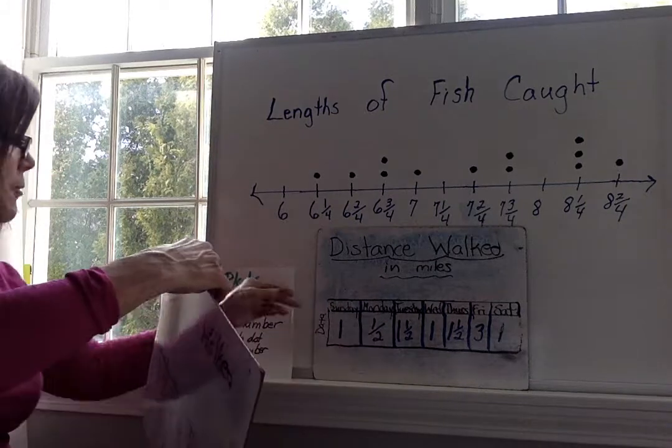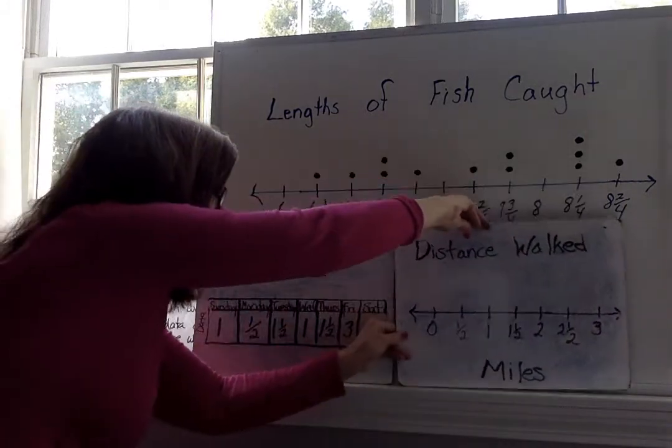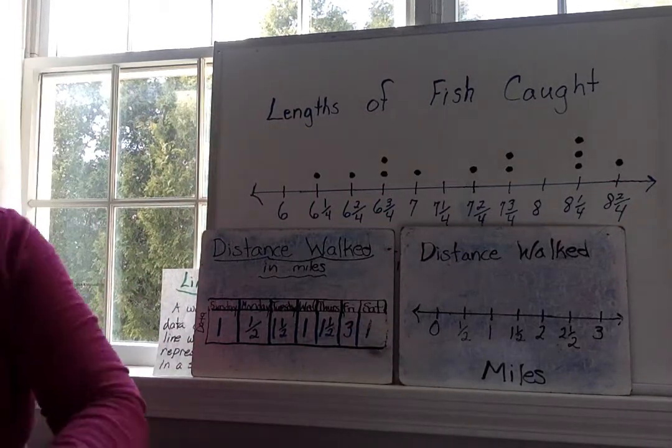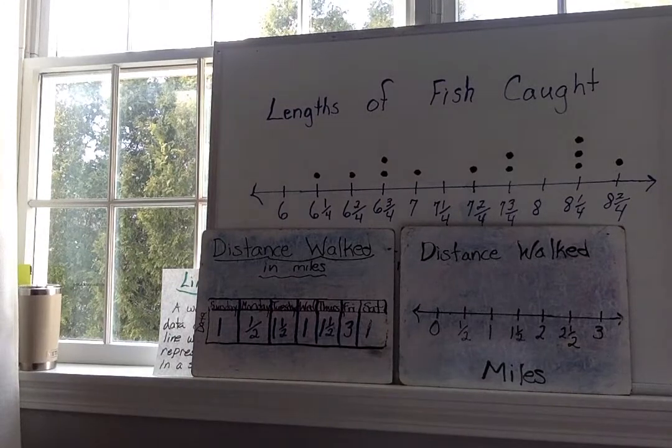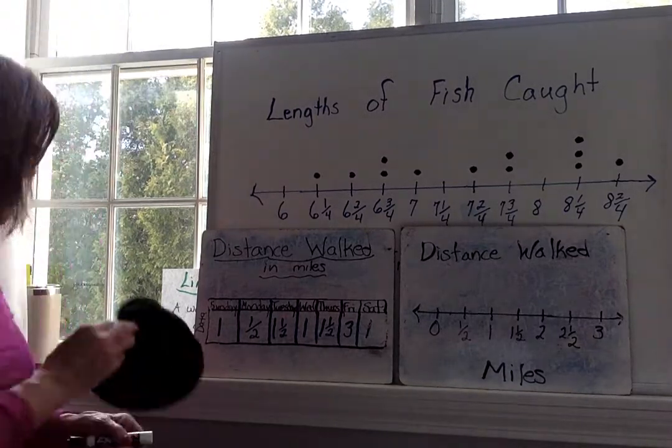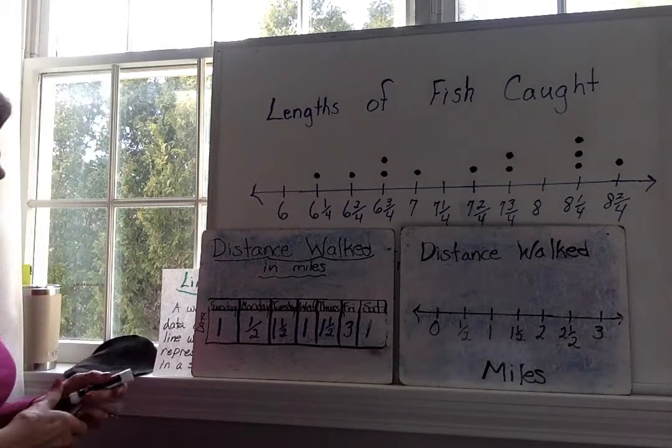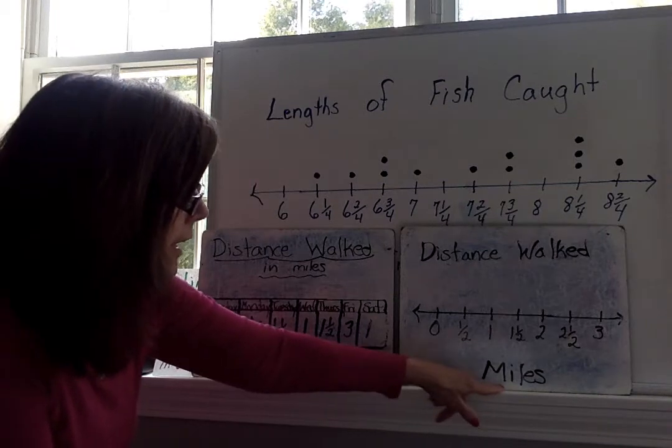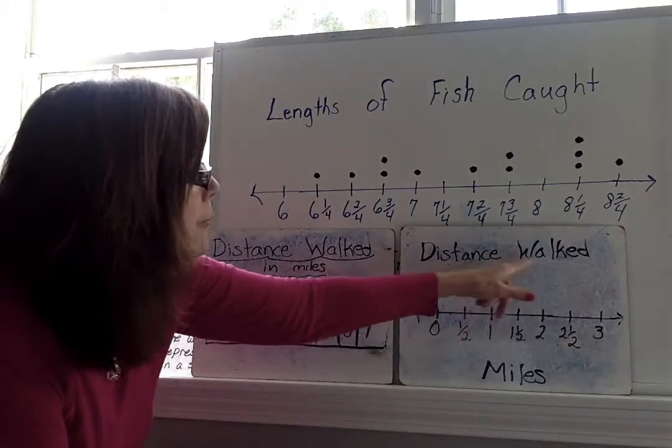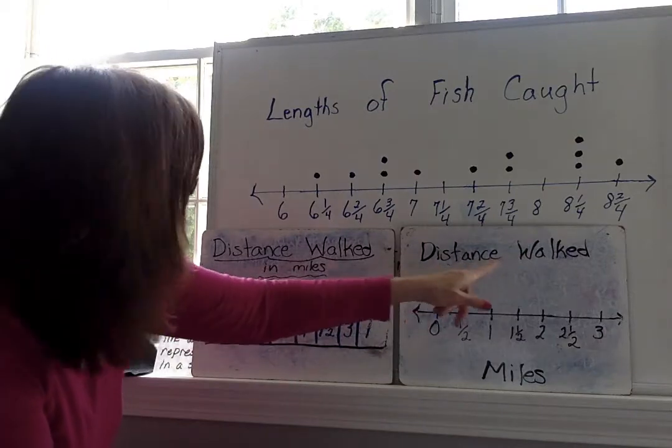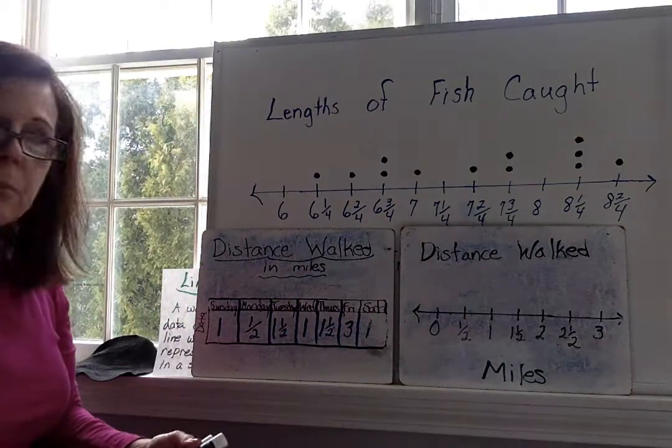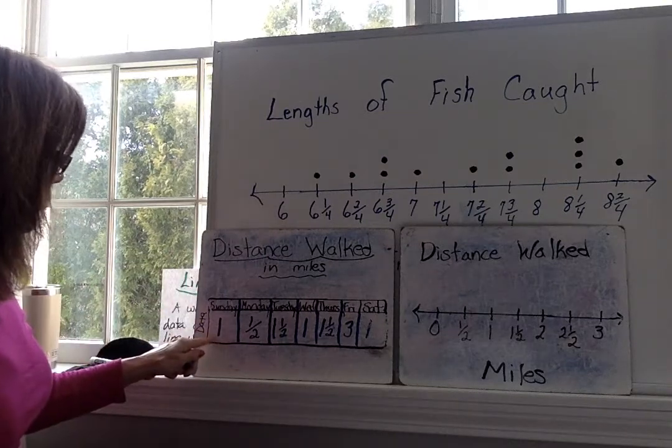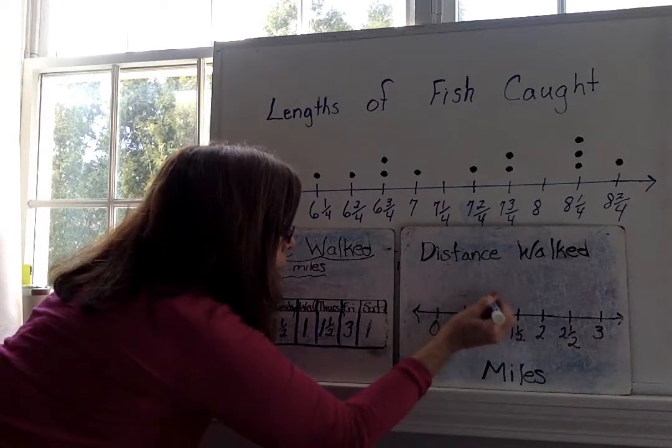So, here I have my line plot. I've drawn it so that we don't have to take time drawing it on the video. So now I need a marker. All right, so what I can do is I have to remember that the distance is in miles. So, on my line plot, I've got it written as miles down here. And I have my title for the line plot is distance walked. All right, so now I have to plot out the distances.